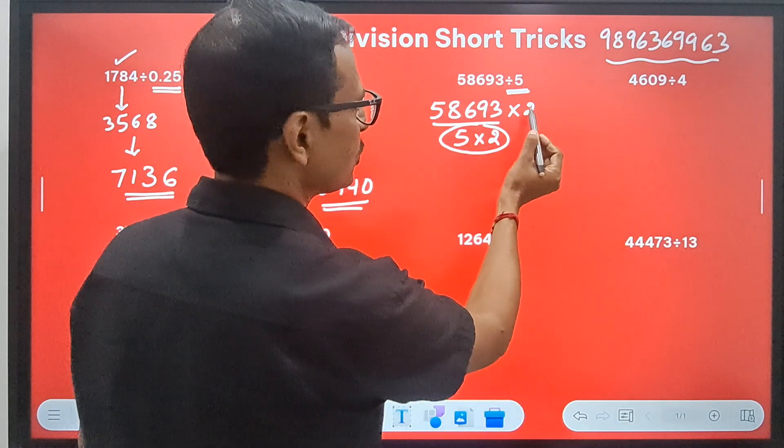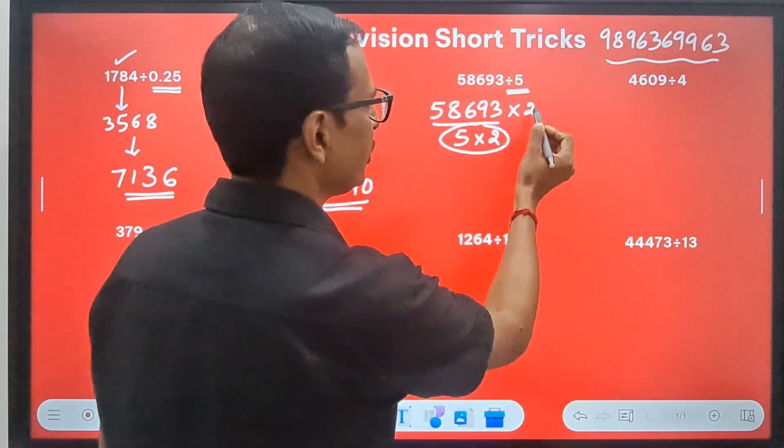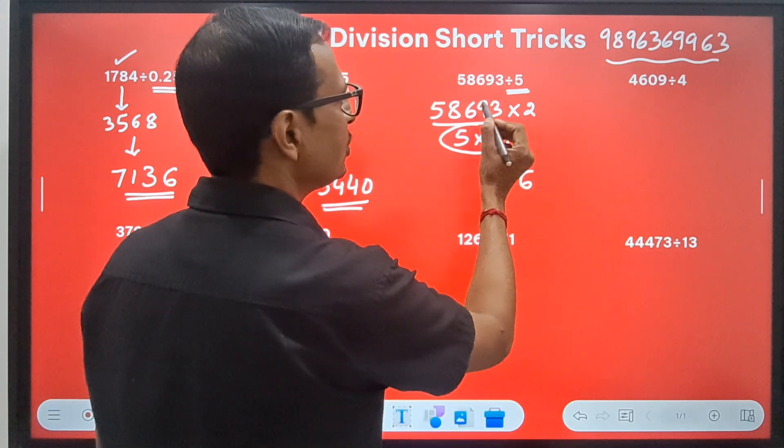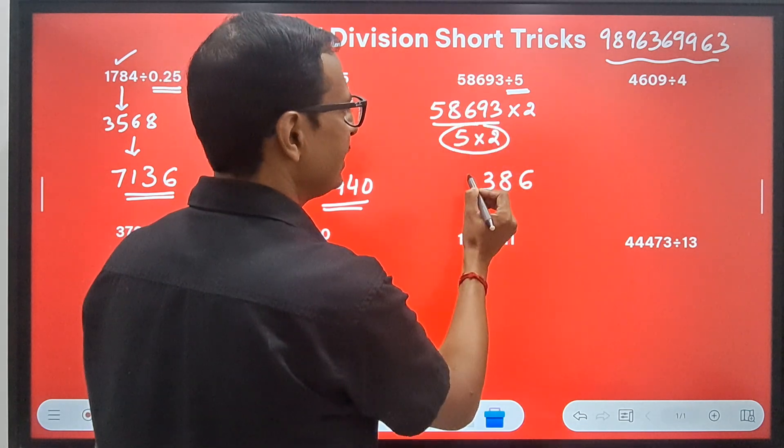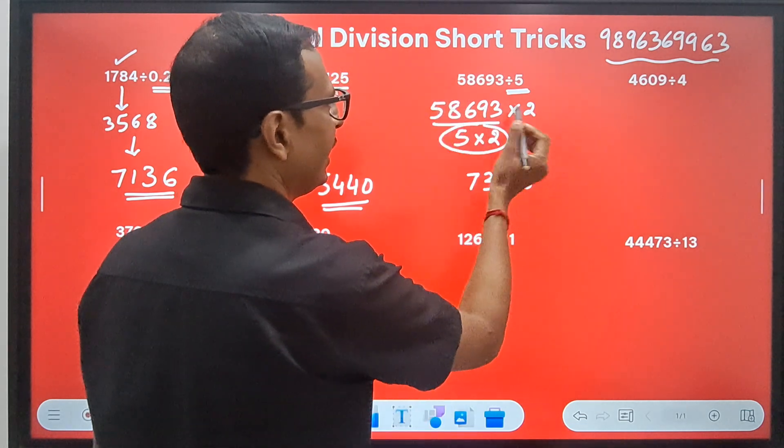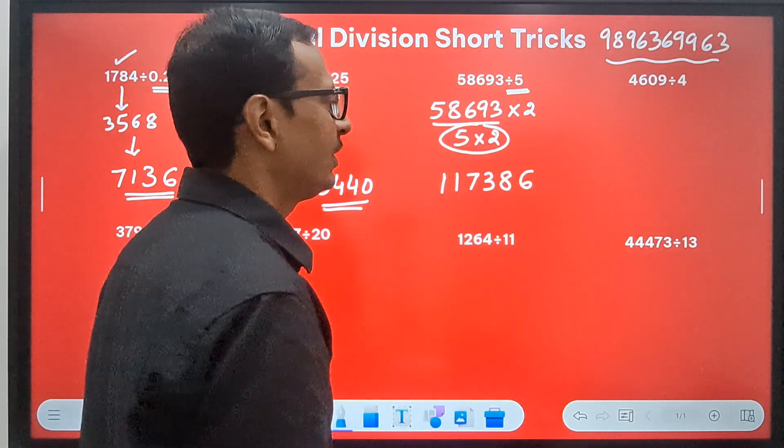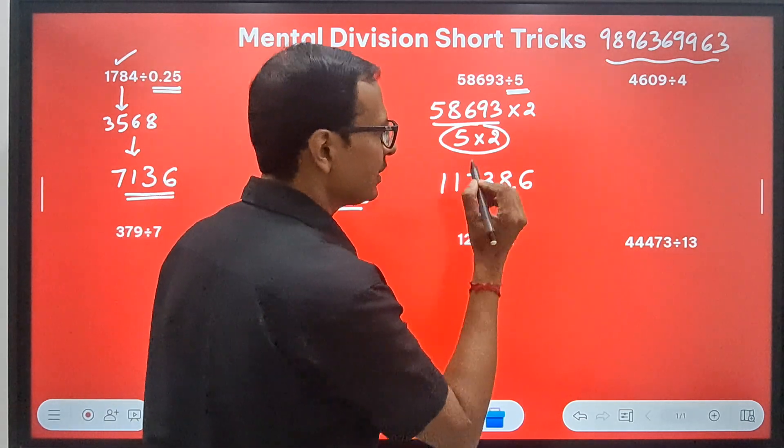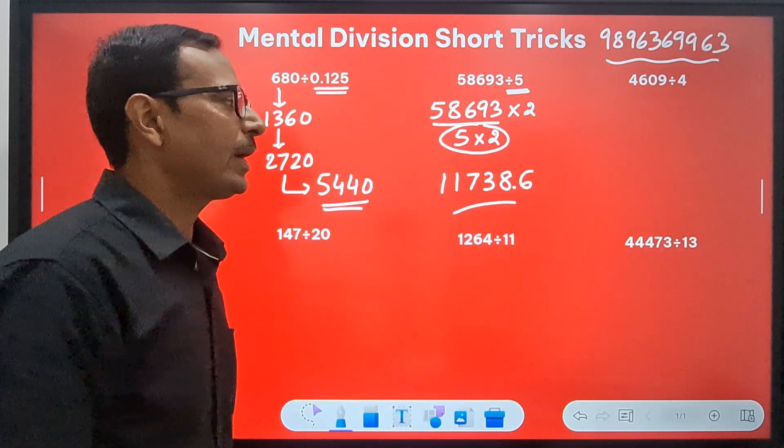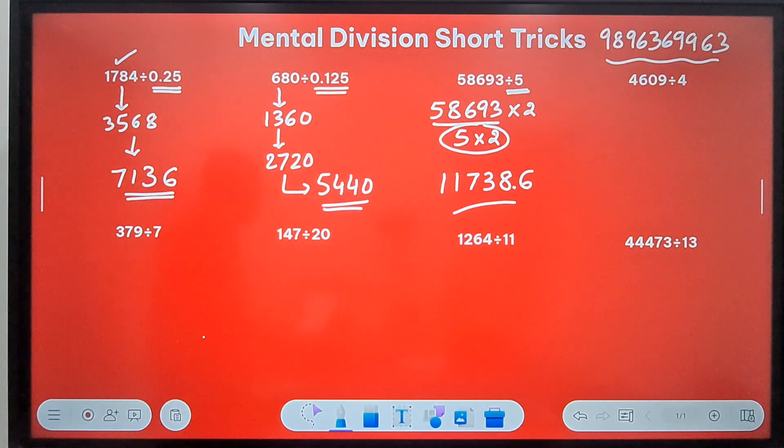How do you double this? Two threes are 6, two nines are 18—so 8 and carry 1. Then 12, 13—so 3 and carry 1. Then 17—so 7 and carry 1, then 11. Put a decimal one digit from the right, and you get your answer: 11738.6.